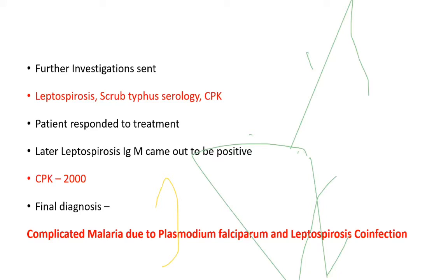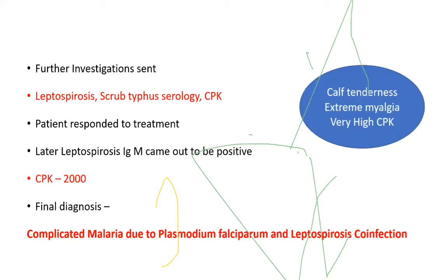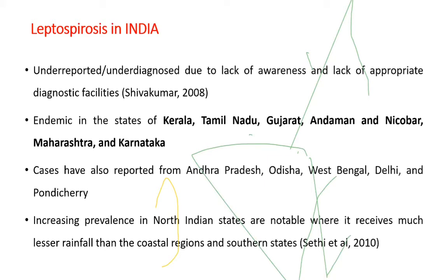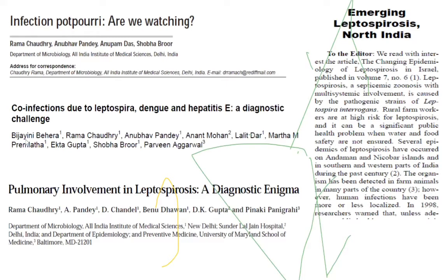CPK was around 2000. The purpose of CPK in this clinical picture: any patient presenting with calf tenderness, extreme myalgia, and very high CPK points towards leptospira. Leptospira is under-reported and under-diagnosed in our country because of limited diagnostic facilities. It is endemic in parts of the country like Kerala, Tamil Nadu, and Gujarat. Cases have also been reported from Odisha and West Bengal, with increasing prevalence now in North Indian states.